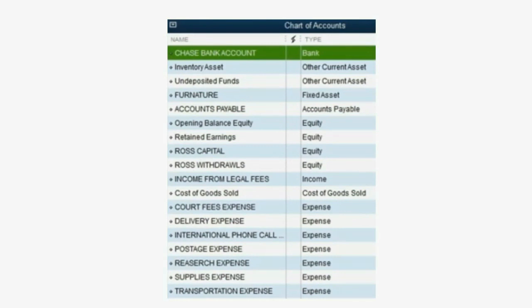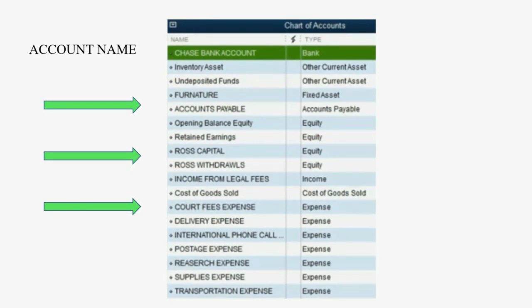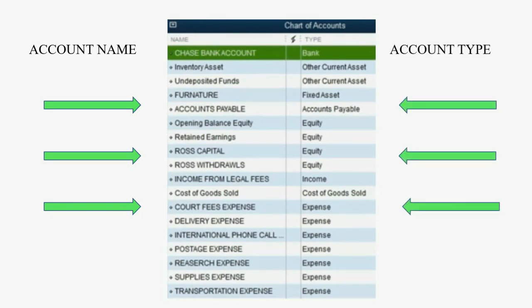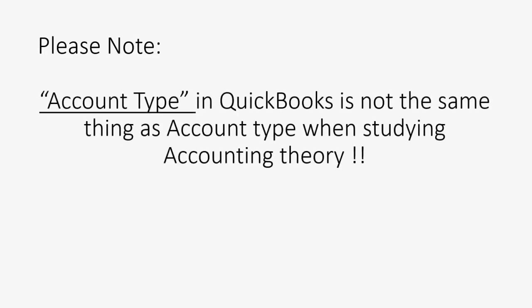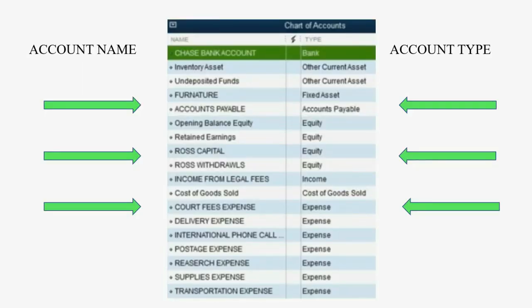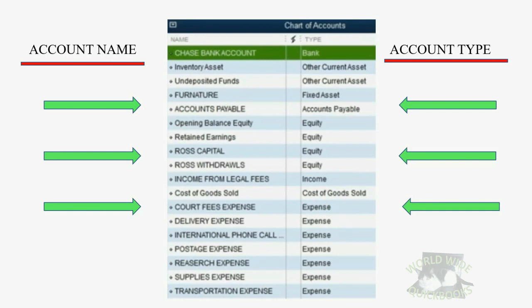When you add accounts, you will add the account name and you will also be required to add an account type. You must be very careful: account type in QuickBooks is not the same thing as account type when studying accounting theory. Account name can be anything you want — the names will show up on reports exactly as you typed them into the chart of accounts. But account type is chosen from a preset pull-down list, so there is a finite number of account types to choose from.